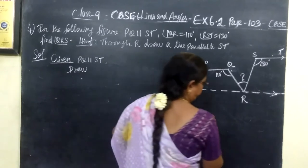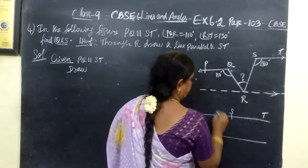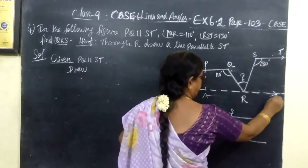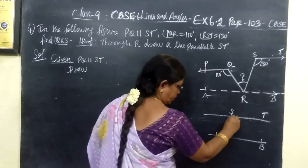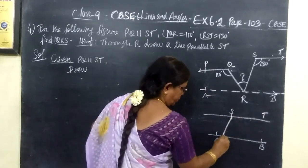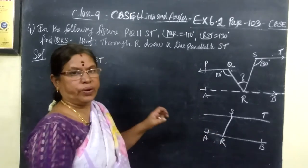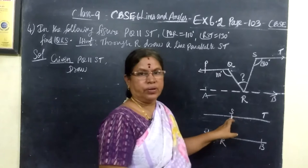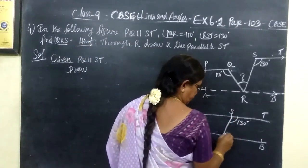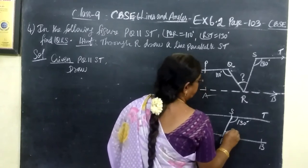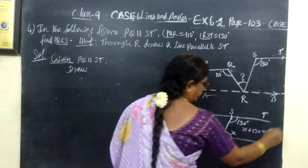So this is ST, and I will give the new line the name AB. Now, which is the transversal? SR is the transversal. You are given a parallel line and a transversal. This angle is 130 degrees — suppose we call this part X.